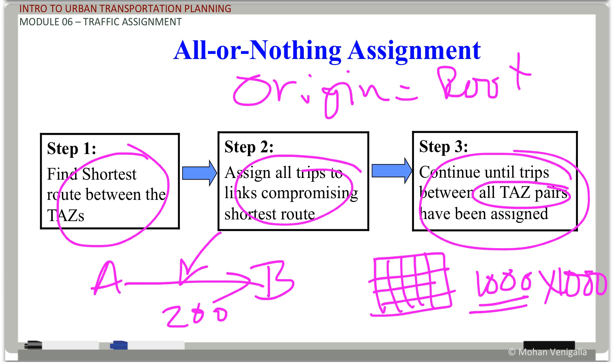Thousand times thousand times you run the path finding algorithm and one million times you build the path. And Washington DC network has 3700 zones. You do the math.